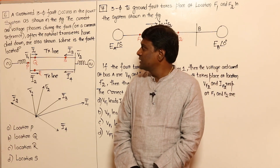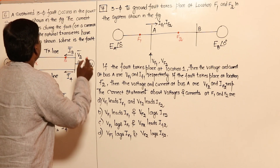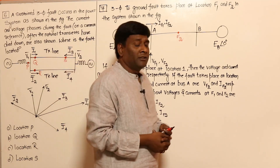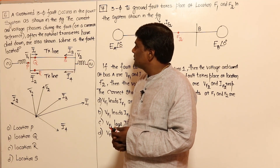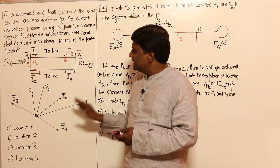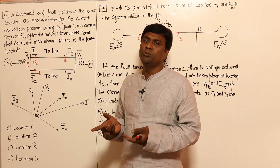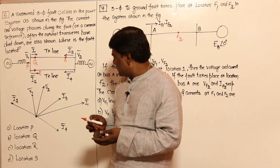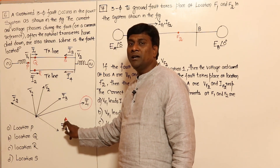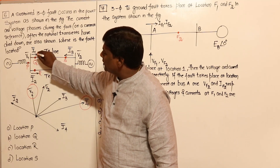In this question, a sustained three-phase fault occurs in the power system as shown in the given figure. The current and voltage phasors during the fault, using a common reference after natural transients have died down, are also shown. Where is the fault located? The fault current should be very much lagging and its magnitude should be more. If the magnitude of I1 is large and V1, I1 are almost lagging by 90 degrees, that indicates reactance.